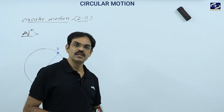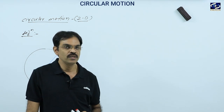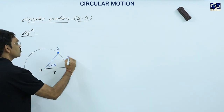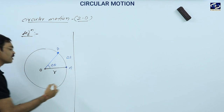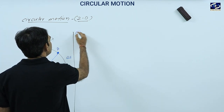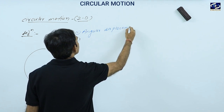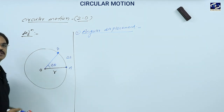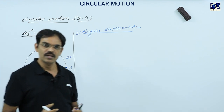Del represents a variable value. When del is written with any physical quantity, it has two meanings: either that quantity is very small, or it is a variable quantity whose value is continuously changing. A to B is del S, that is linear displacement. Now we look at the terminology used in circular motion. First is angular displacement — this is angular displacement. After time T, the angle created at the center of the circle is called angular displacement.